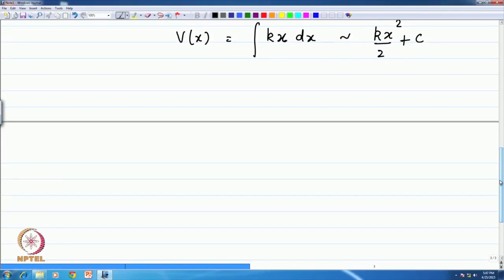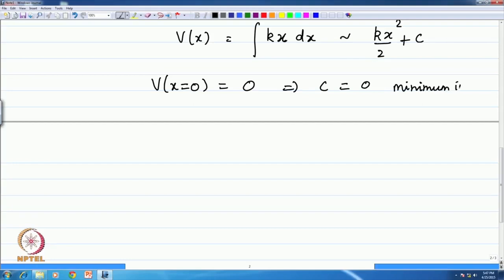We can always choose that the potential at the equilibrium x equals 0 is 0, which means that the constant can be chosen to be 0. This is the minimum or what is known as the minimum in the potential. And therefore, the potential energy for a harmonic oscillator as a function of the displacement from equilibrium is given by half k x square.